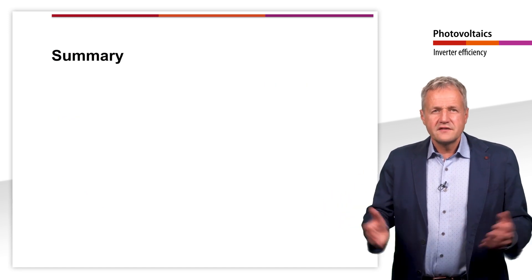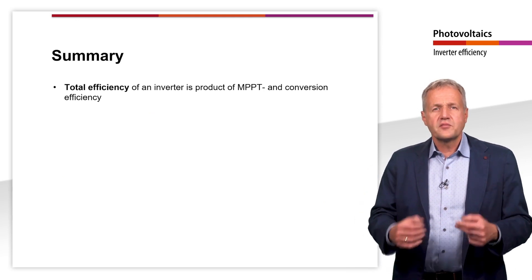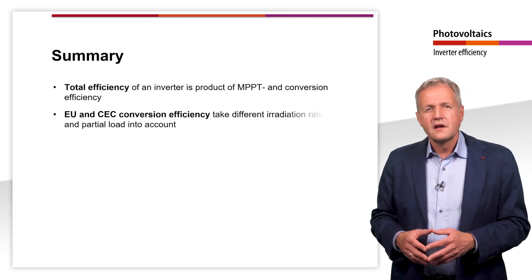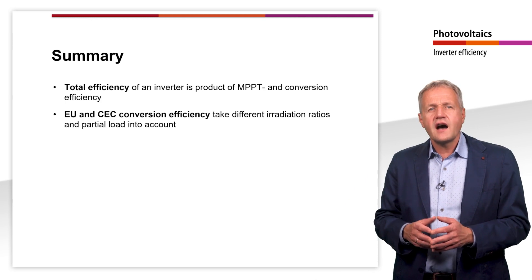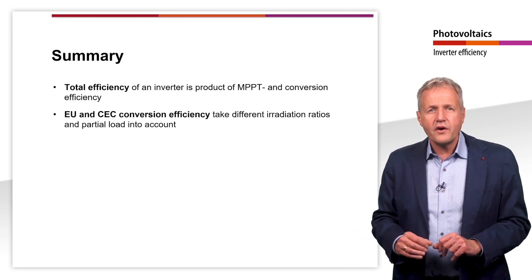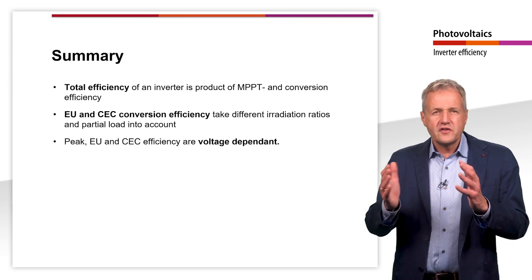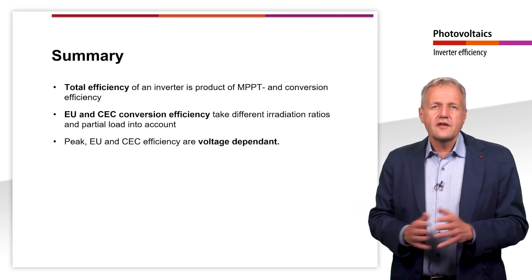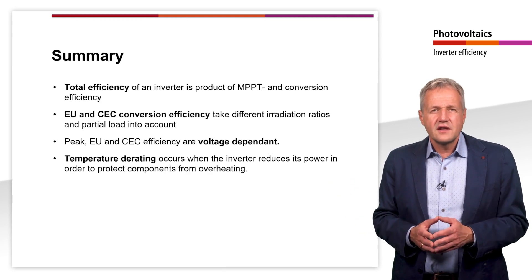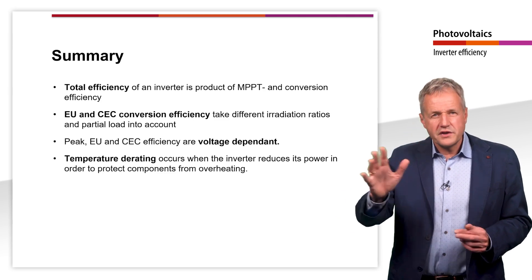Let's summarize this teaching unit. We have seen that the total efficiency of an inverter is the product of the MPPT efficiency and the conversion efficiency. The European and the Californian efficiencies are derived from the weighted efficiencies at different output powers with respect to the rated power. However, both the peak, the European, and the Californian efficiencies are voltage dependent. Finally, we learned that the inverter can be operated above its rated power, but then the output power is reduced.